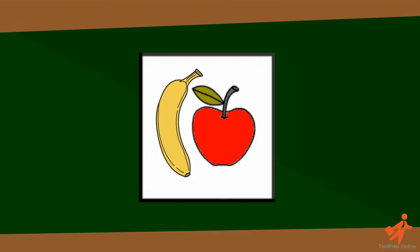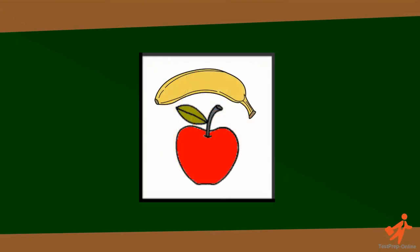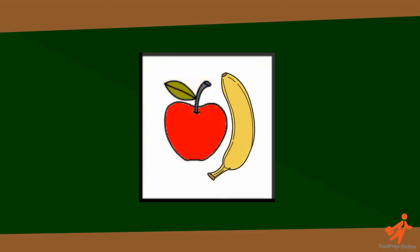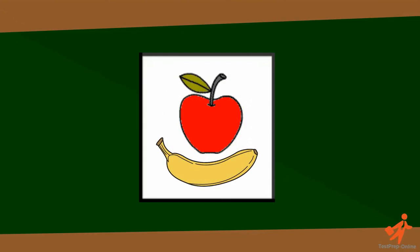In the first picture the banana is to the left of the apple. In the second picture it's above it. Then it's to the right of the apple. And finally the banana moves below the apple.